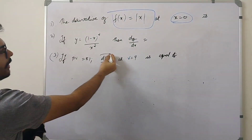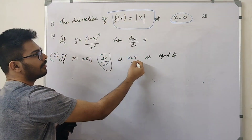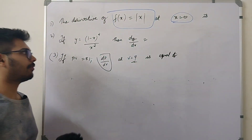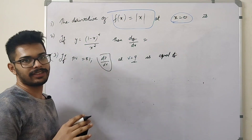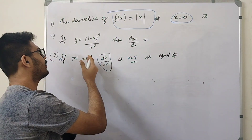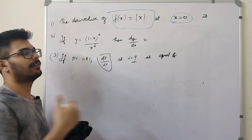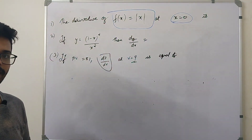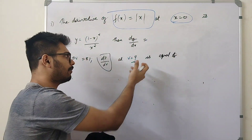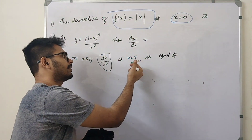dp by dv, and v equal to 9 minus x squared. The derivative of x squared divided by x squared is the derivative of x squared.